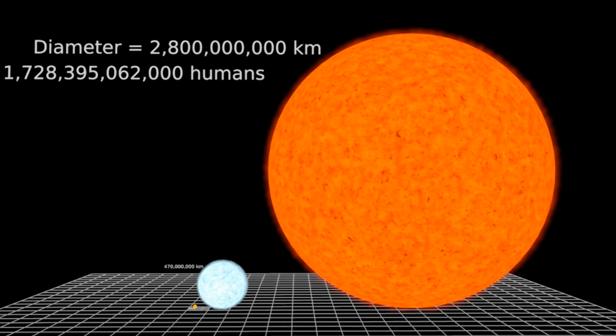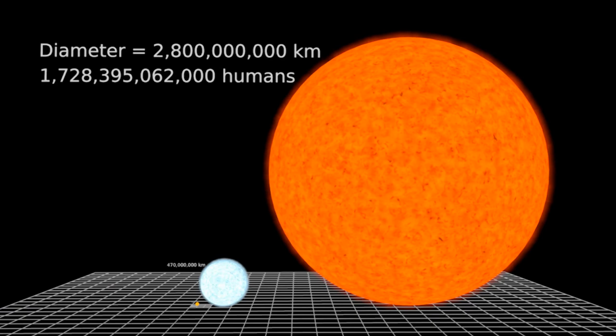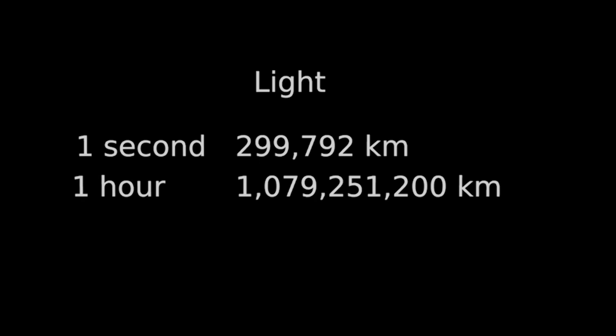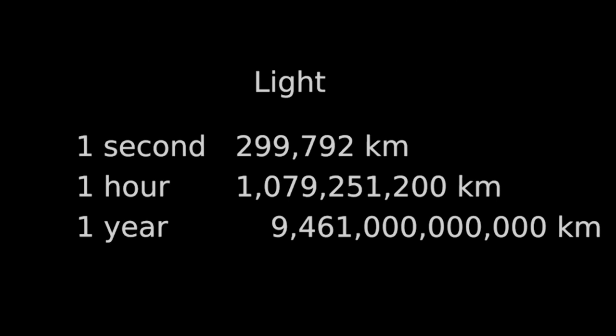Oh, but wait. It gets better. Remember how fast light goes? Just under 300,000 kilometers in one second? Just over 1 billion kilometers in one hour? How fast do you think light will travel in one year? I'll tell you. It's about 9,461,000,000,000 kilometers. There's a unit of measurement for this distance, and it's called a light year. Fitting, isn't it? Now it's time to really ramp up the scale.